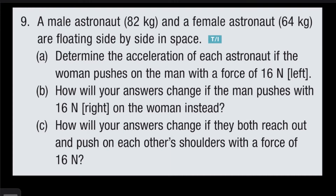The question reads: a male astronaut of 82 kilograms and a female astronaut of 64 kilograms are floating side by side in space. We need to determine the acceleration of each astronaut if the woman pushes on the man with a force of 60 newtons to the left. How will your answers change if the man pushes with 60 newtons to the right on the woman instead? And finally, how will your answers change if they both reach out and push on each other's shoulders with a force of 60 newtons?